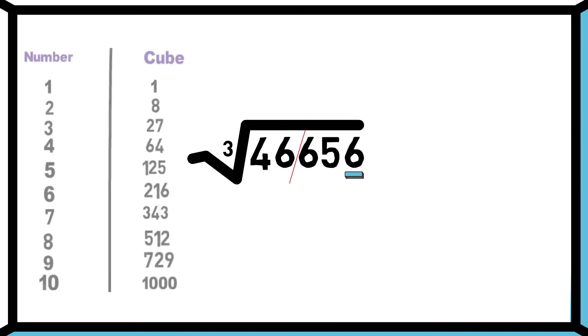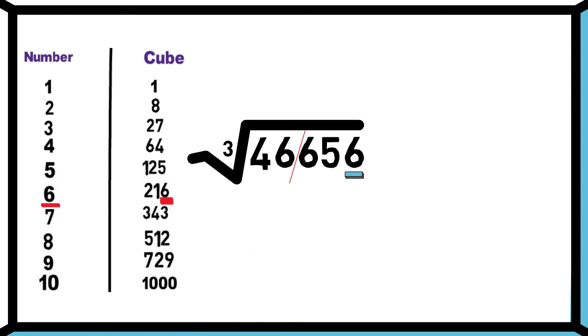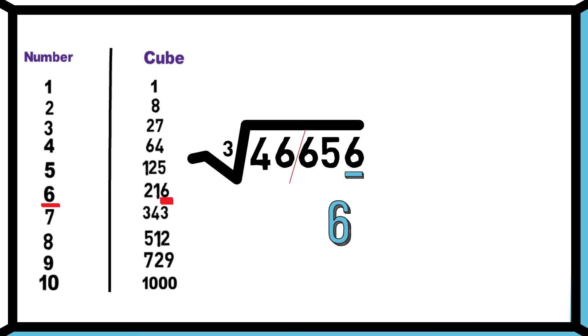If the last digit of the question is 6, then the last digit of its cube root will be 6. So we got the last digit of our answer, which is 6.